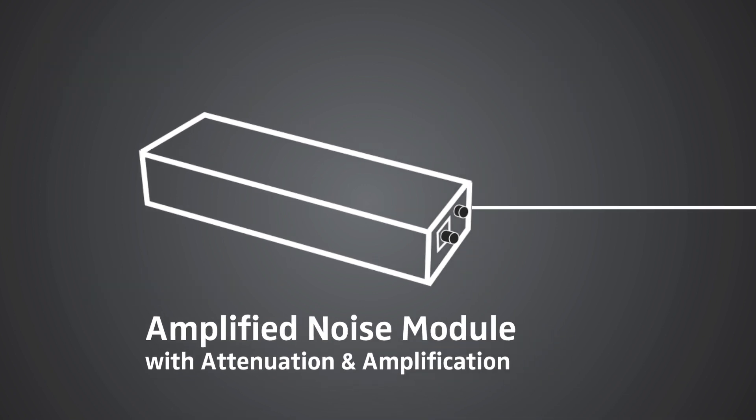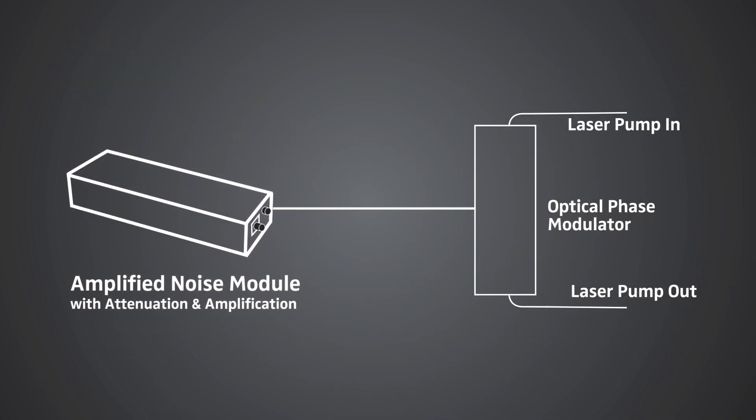In a case like this, the customized noise source, which includes specific attenuators and amplifiers alongside the noise source in a single package, connects directly to the optical phase modulator.